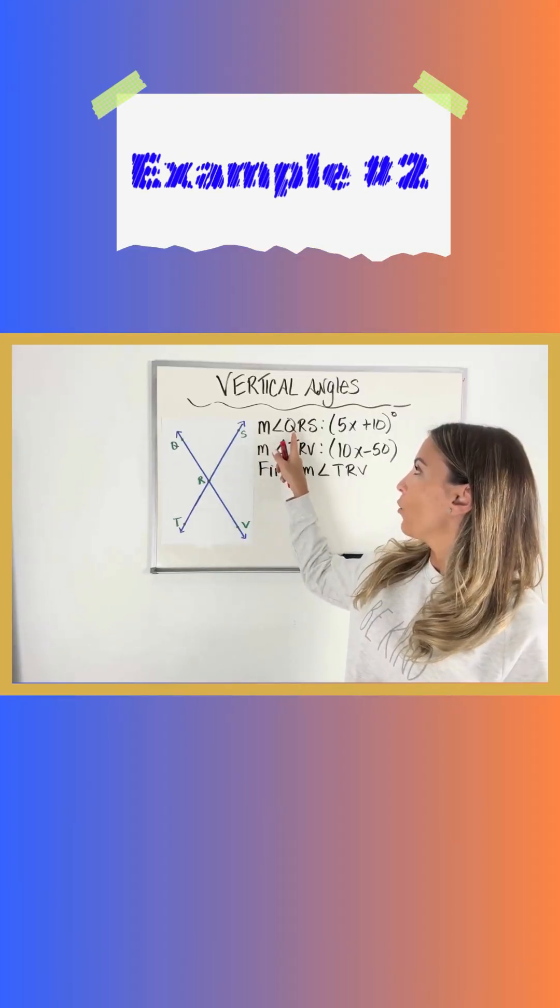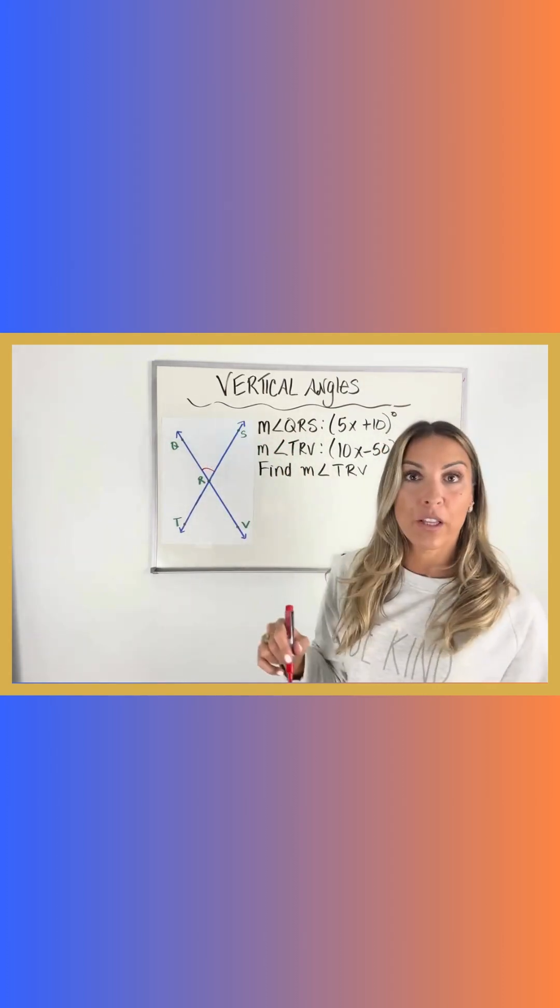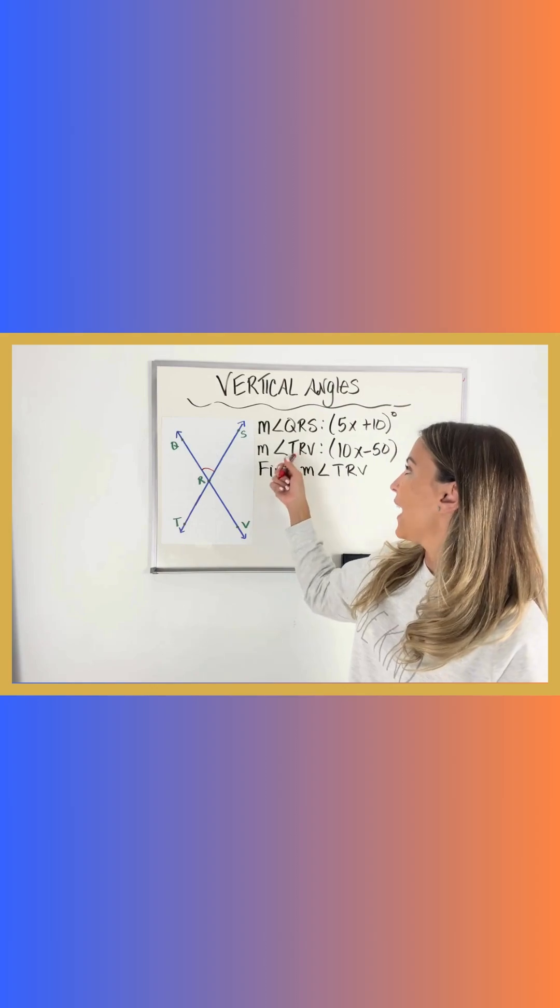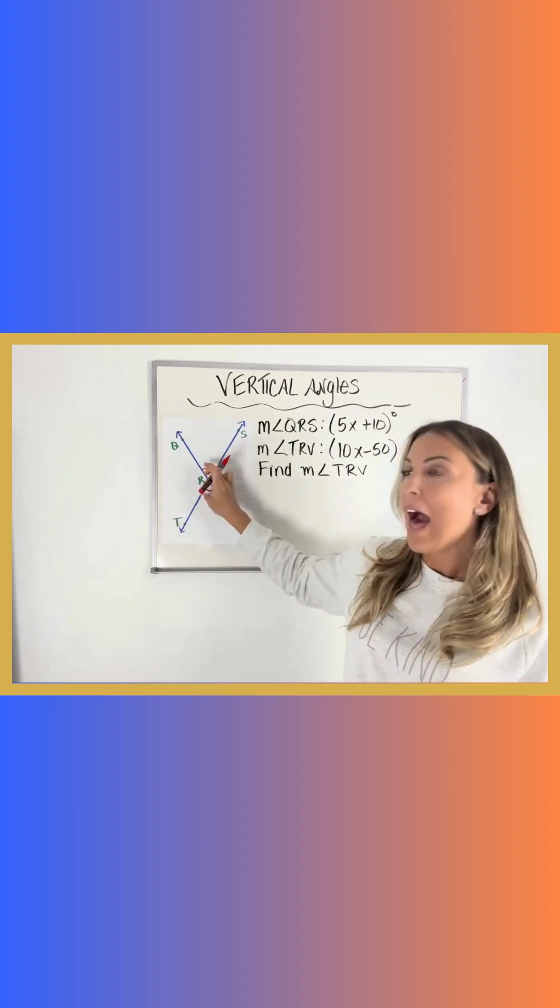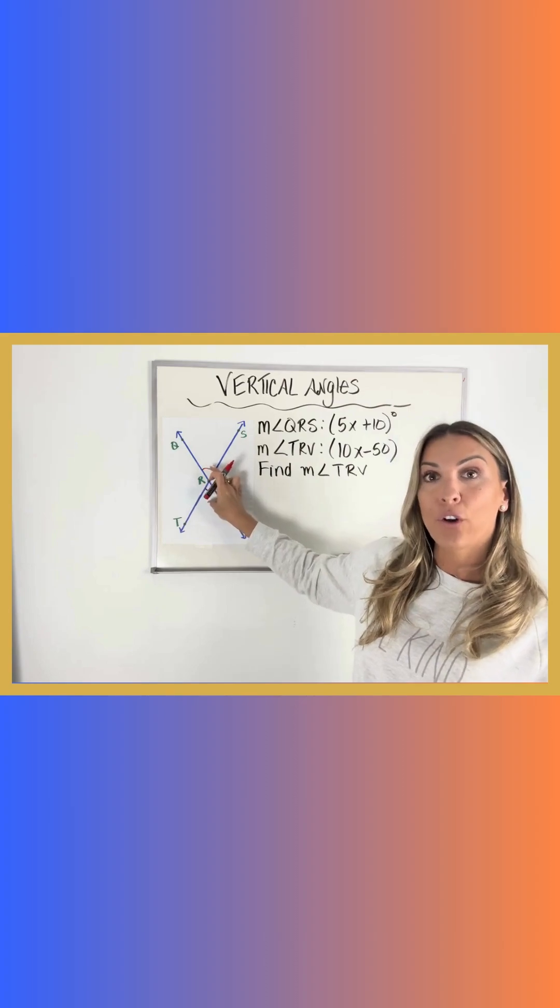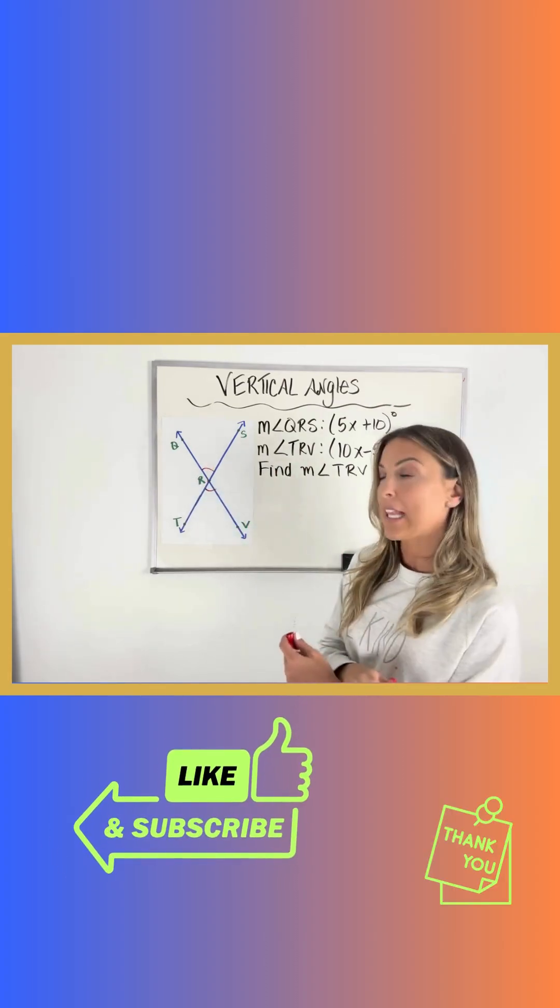So I'm dealing with angle QRS. QRS is right here. I'm going to label it in my picture so it's clearer to me what I'm dealing with. And angle TRV. Once I label these, I realize that what I'm given is vertical angles. They're angles that are opposite of each other for my two intersecting lines.